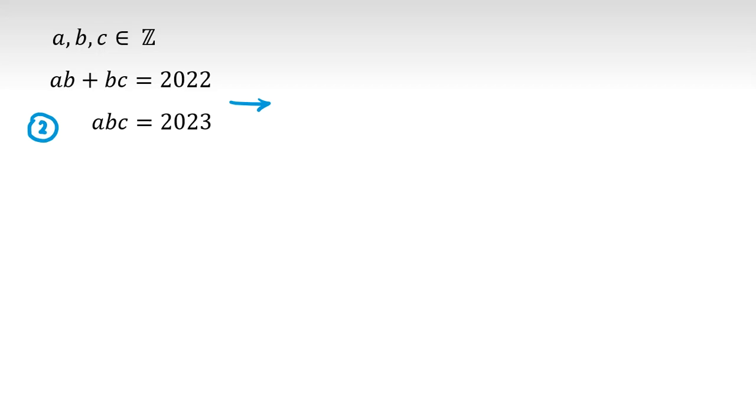Let's call this one the second equation, this one the first equation. We say 2 minus 1. So left hand side will be ABC minus AB minus BC.